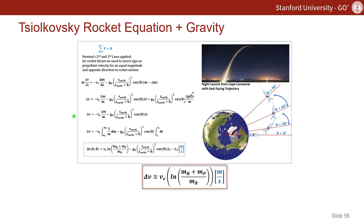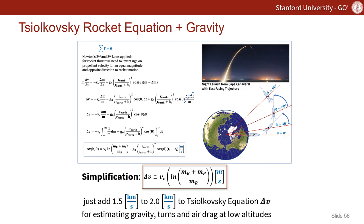While we can develop an approach similar to the Tsiolkovsky rocket equation and add gravity to solve the change in velocity for a rocket as a function of height and this angle theta shown here, probably a more useful simplification is just to add 1.5 to 2 kilometers per second to the Tsiolkovsky rocket equation delta V for estimating gravity, turns, and air drag at low altitudes.